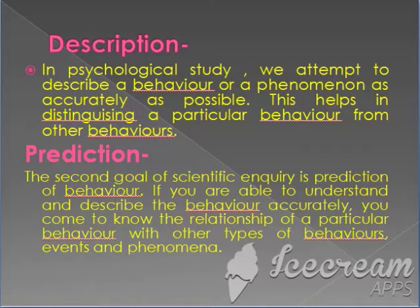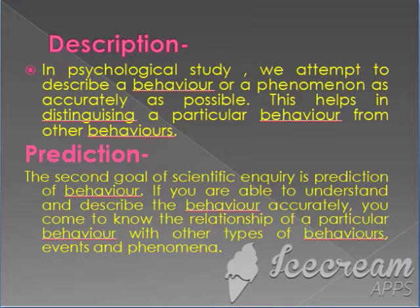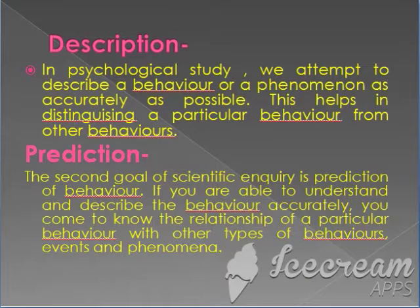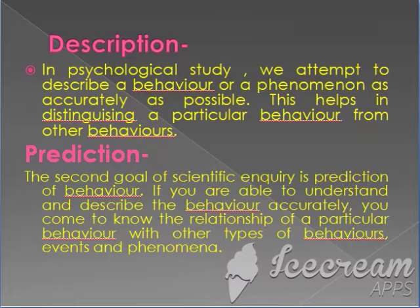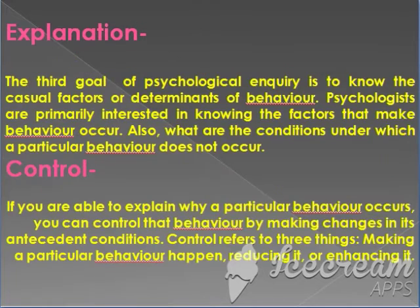For example, a researcher is able to establish a positive relationship between the amount of study time and the achievement in different subjects. If you come to know that a particular child devotes more time for study, you can predict that the child is likely to get good marks in the examination. Prediction becomes more accurate with an increase in the number of persons observed.